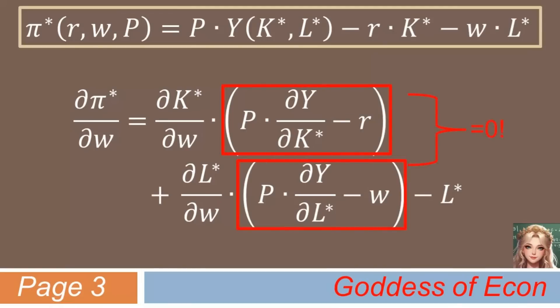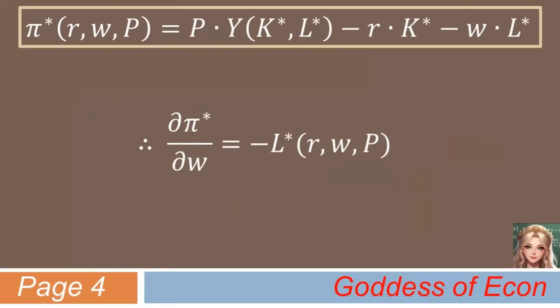At the optimum, we know that these are simply equal to 0, therefore simplifying the right-hand side of the equation. What this means is that we are essentially left with minus l* only. So, in summary, if you partially differentiate the maximized profit function with respect to w, you can get a factor demand function for l right away.